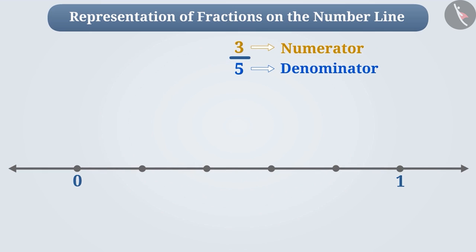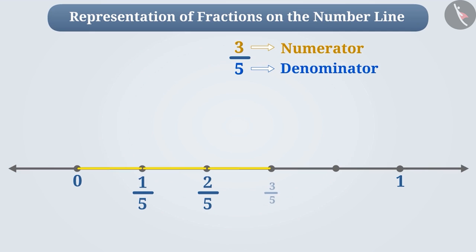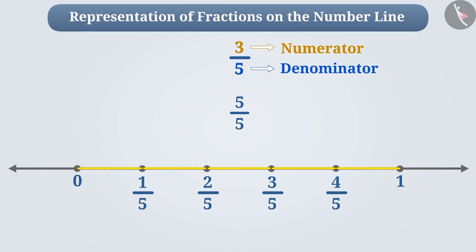The numerator 3 tells us that three parts are taken out of the five equal parts. That means one part on the number line will be one by five, two parts will be two by five, three parts will be three by five, four parts will be four by five. Similarly, if five out of five parts are taken, then the fraction will be five by five.